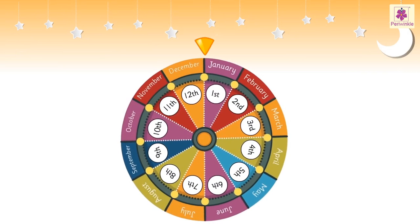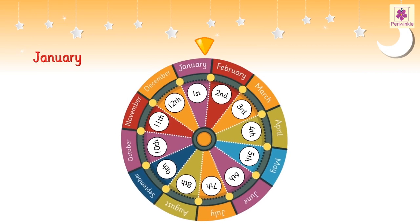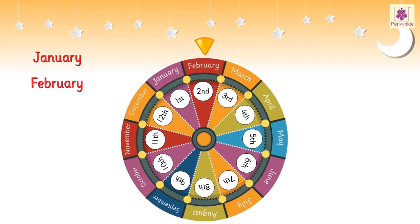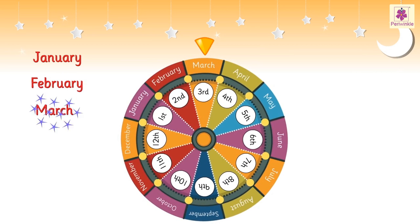The first month is January. The second month is February. The third month is March.